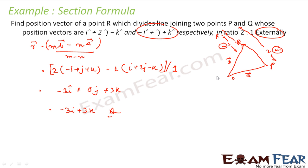So we see you get different answers in both cases — in one case it was internal division, the other case was external division. The key here is that for 2:1 division, P to R is 2 and R to Q is 1; then for external division the formula becomes M into the opposite side minus N into the opposite side, divided by M minus N.